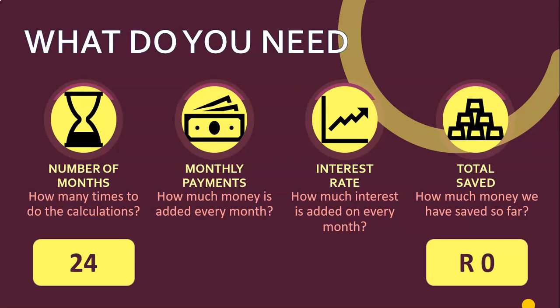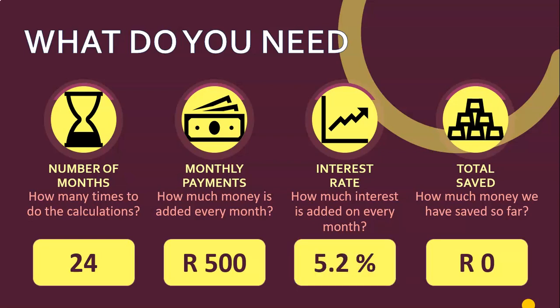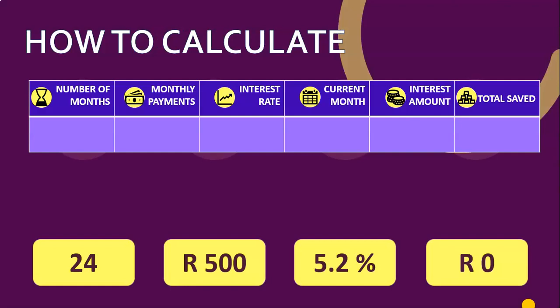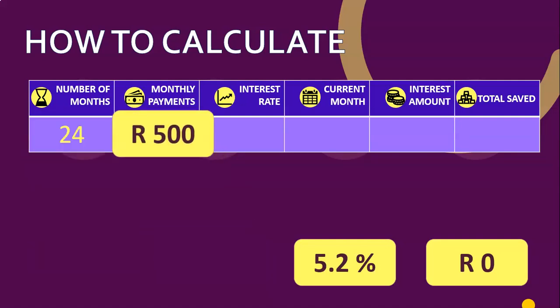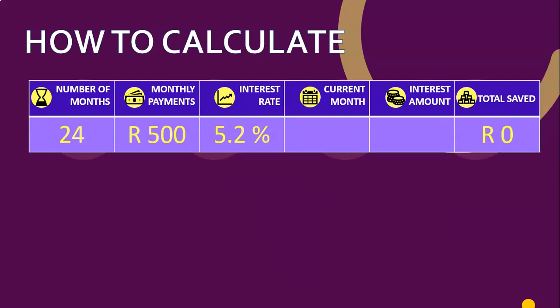Let's say we're going to save for two years - if we're going to go on holiday two years time, so that's going to be 24 months. I've looked at my budget and I can save about 500 rand every month. The bank says they will give me 5.2% interest every month - please take note that is a very high interest rate, no one's ever going to give you that much, but let's use it for this example. So our monthly payments are 500 rand, interest rate is 5.2%, and total saved starts at zero.